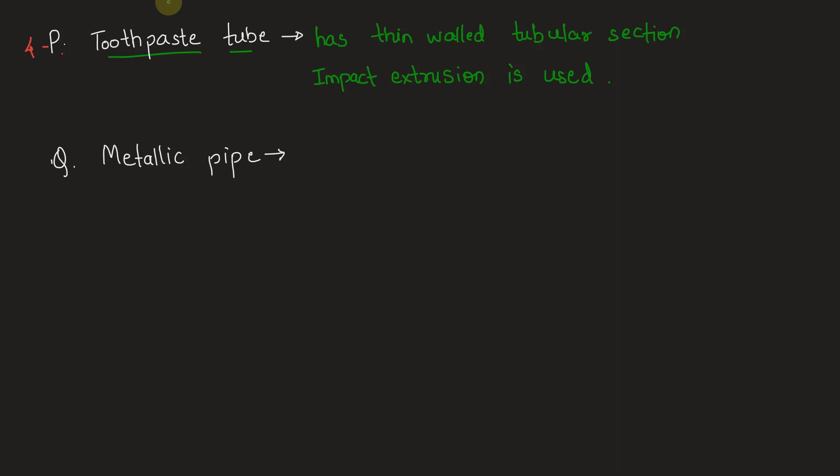These are hollow cylindrical shaped objects, and the axis of such cylindrical shapes will coincide with the centrifugal casting machine axis which is used to manufacture these metallic pipes. Therefore Q matches with centrifugal casting, which is given first in the manufacturing processes group.